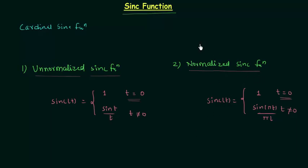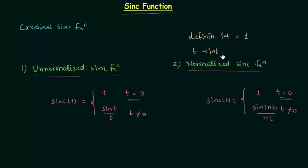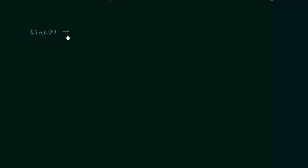There is one more difference between the unnormalized and normalized sinc functions: in the case of the normalized sinc function the definite integral over the real numbers equals 1. All zeros of the normalized sinc function occur when t is an integer. Now let's discuss the properties of the normalized sinc function, since we use it in digital signal processing. The first property is that the sinc function is an energy signal, and the total energy equals π.